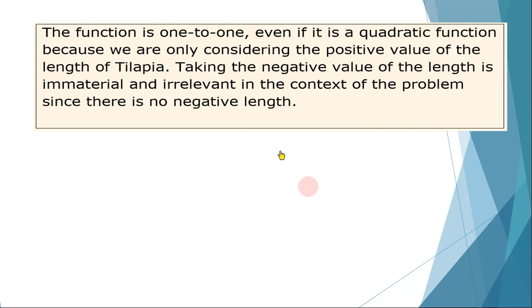The function is 1 to 1, even if it is a quadratic function, because we are only considering the positive value of the length of tilapia. Taking the negative value of the length is immaterial and irrelevant in the context of the problem, since there is no such thing as negative length.